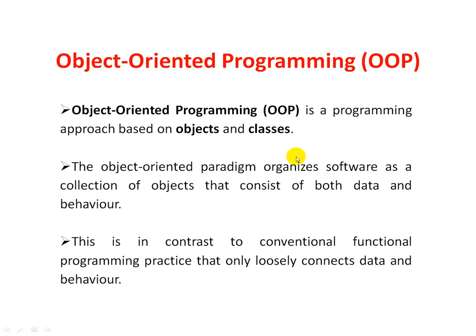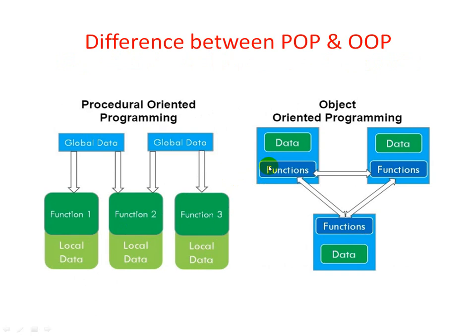In procedural programming, the main concentration is on procedures or functions. In object oriented programming, the main focus is on data. Whereas in procedural programming, the main focus is on procedures, functions, or algorithms. As we can see in this diagram, there is some global data which is globally defined, so anyone can access it. There are also some functions, and all of those functions can access this global data.